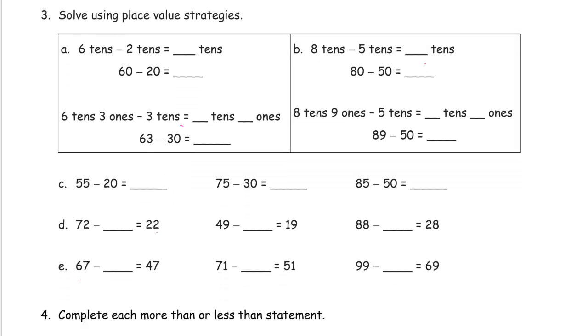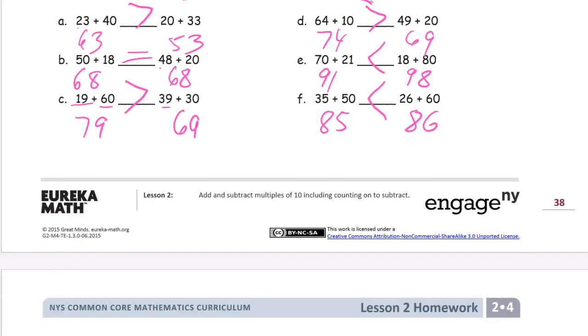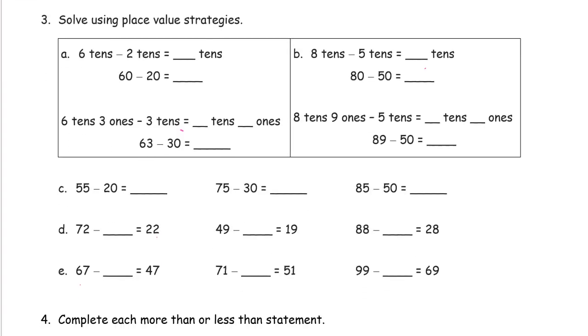And we're using more place value strategies, except now it's with subtraction. This first page is all addition, using place value and arrow way, or number bonds. Now we're going to do everything, but now we're going to do it with subtraction. 6 tens minus 2 tens, this thing's 6 minus 2, it's 4. But we're talking about tens, so 4 tens is 40. And here we have it. 6 tens minus 3 tens is 3 tens, and we're not subtracting any ones, so we still have the 3 ones. 8 tens minus 5 tens is 3 tens. But since it's tens, that's 30. Now we've got 8 tens, we're subtracting 5 tens, 3 tens are left, and we're still going to get to keep all 9 ones, because we're not subtracting any ones. That's 39.